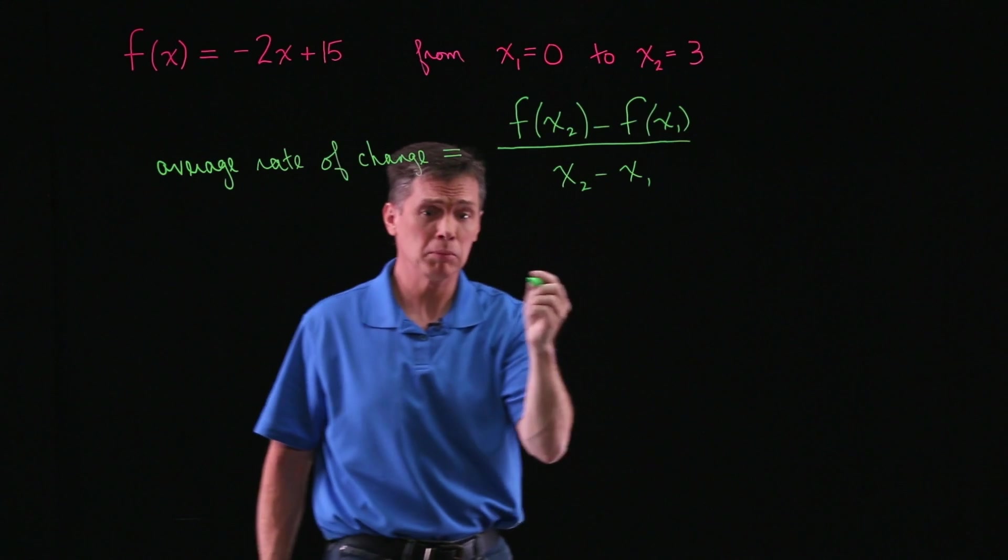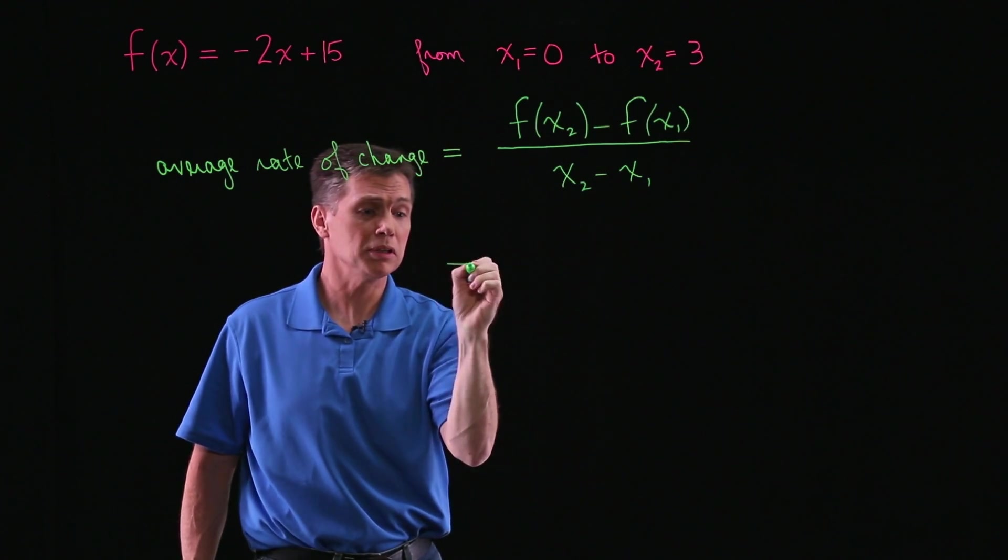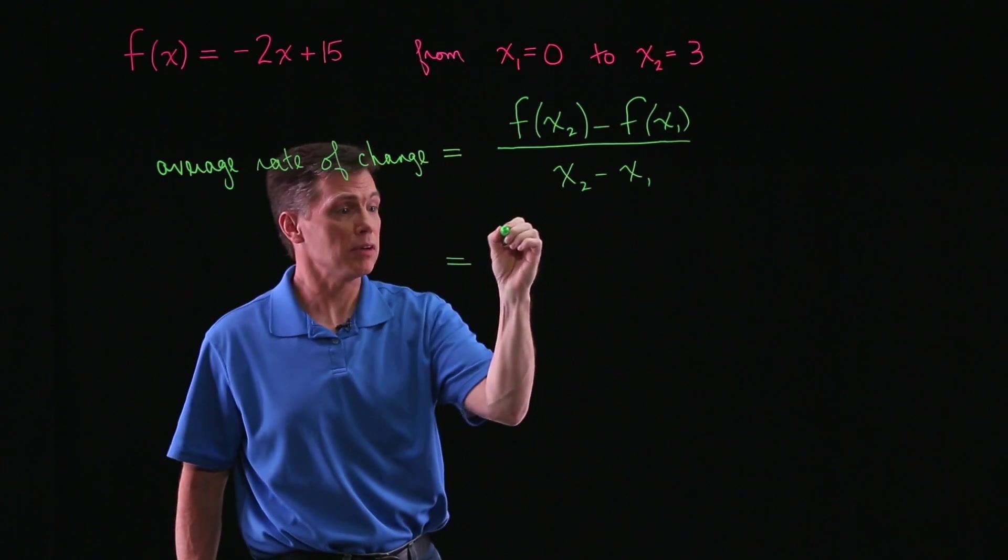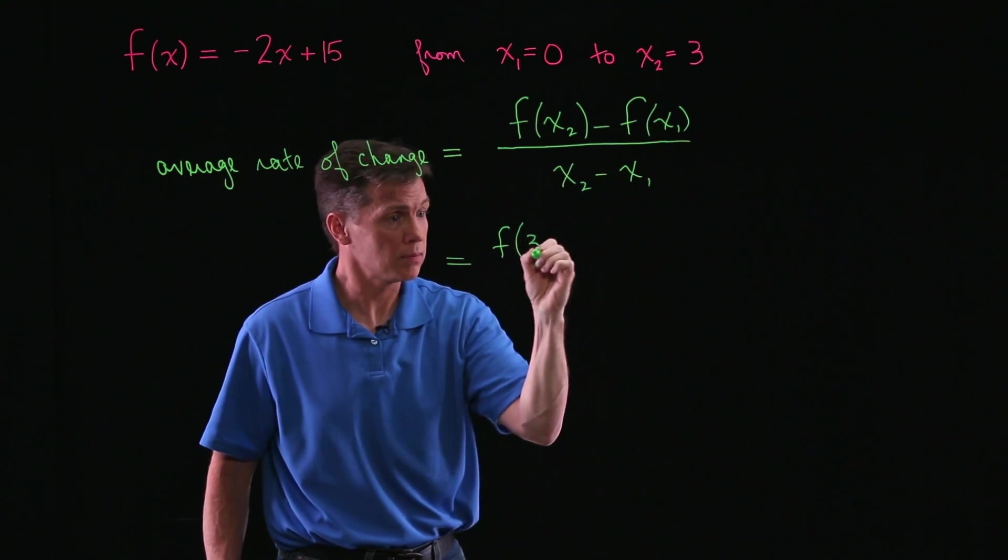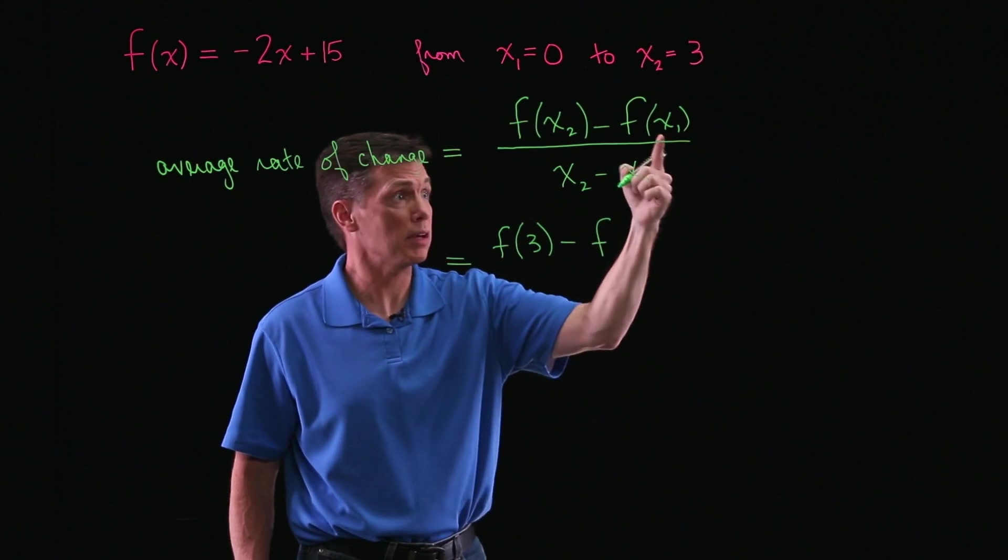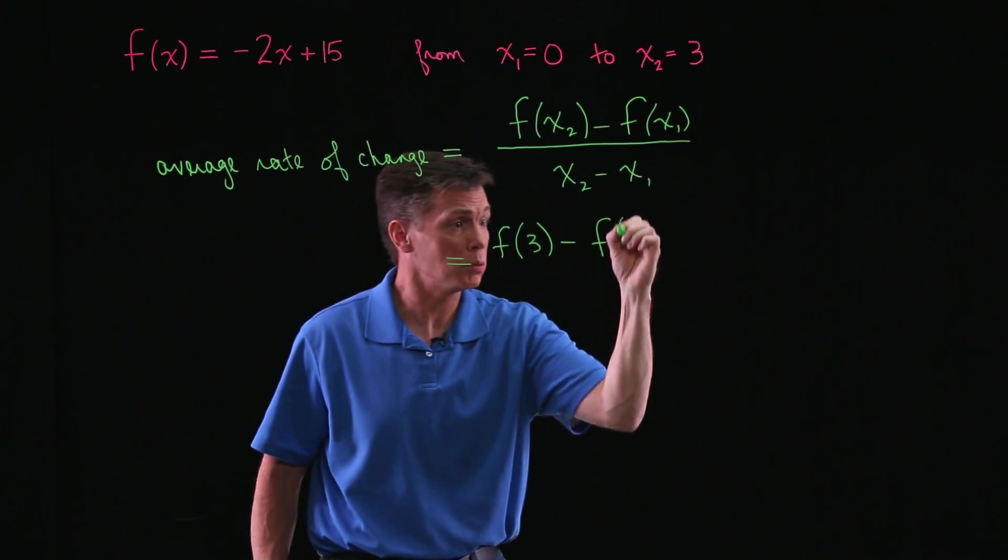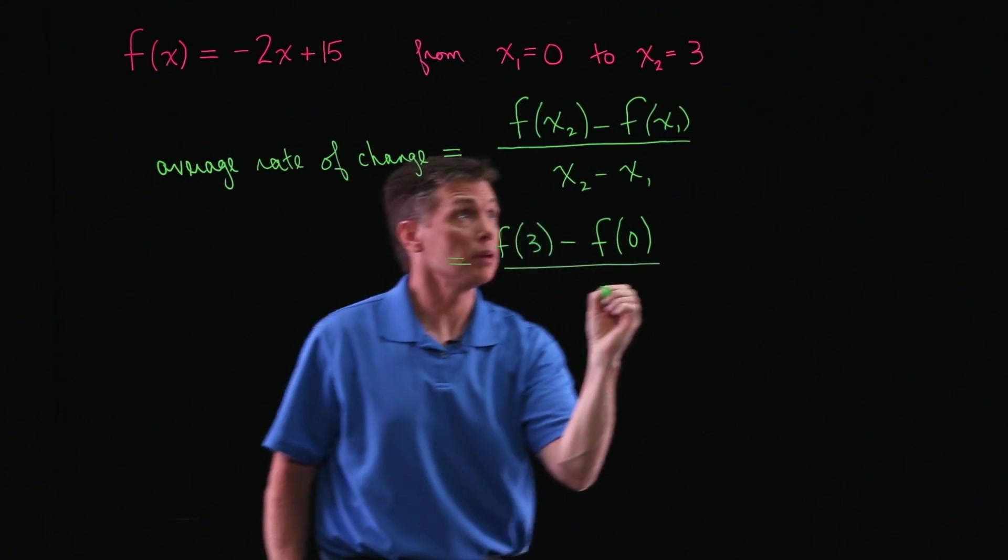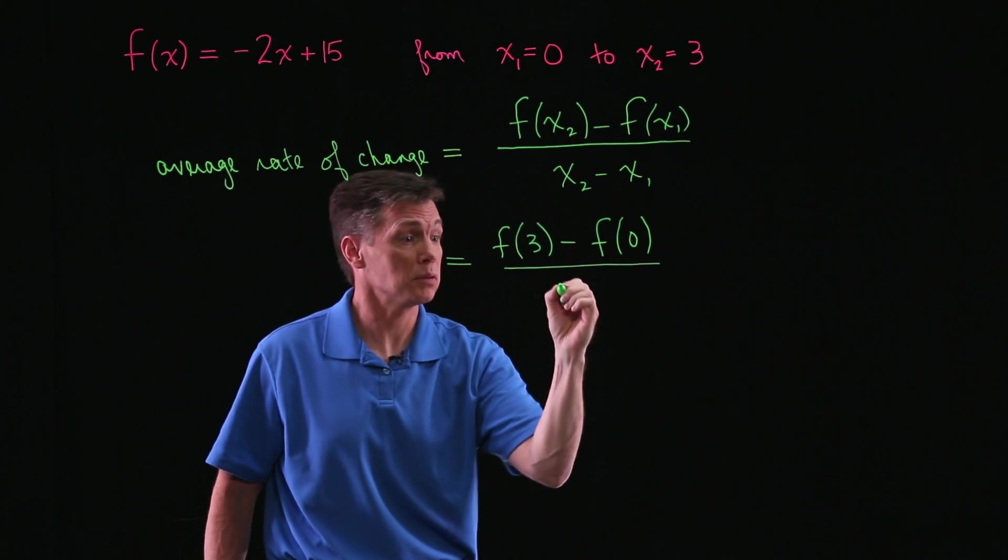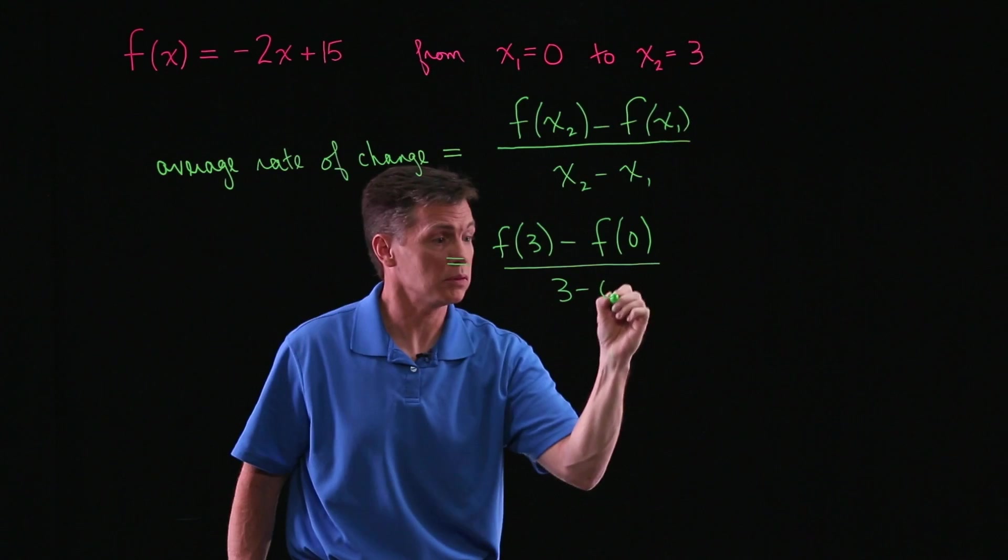So for this type of problem, you really just want to plug in your particulars. So f of my x sub 2 is 3, subtract f of x sub 1, my x sub 1 is 0. And then x sub 2 minus x sub 1, 3 minus 0.